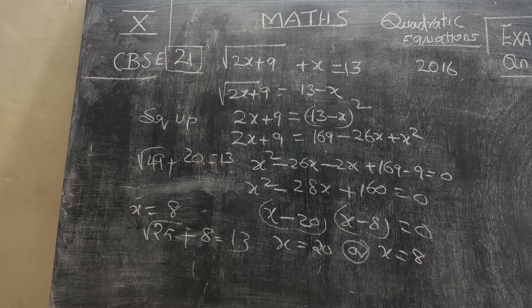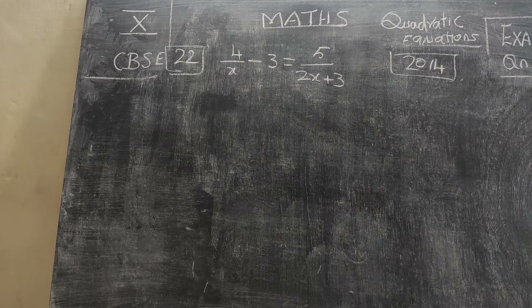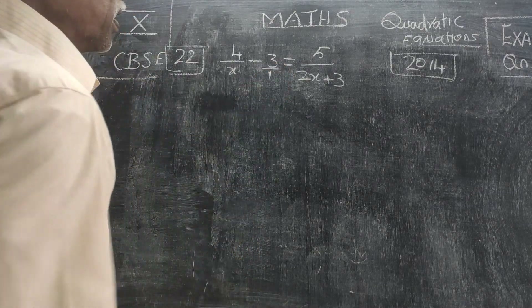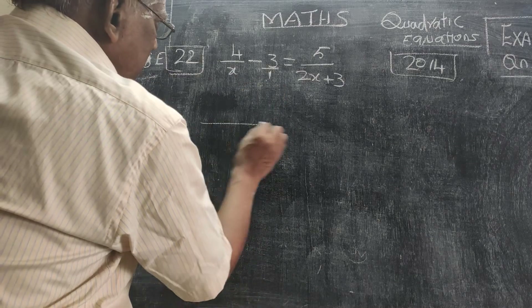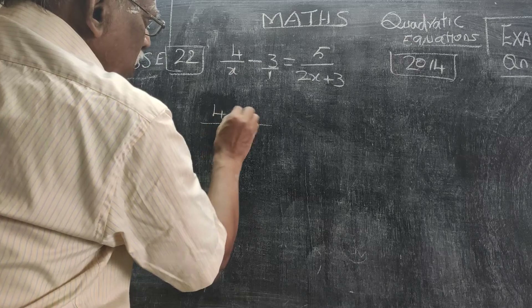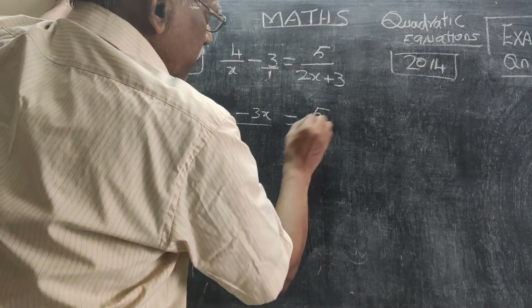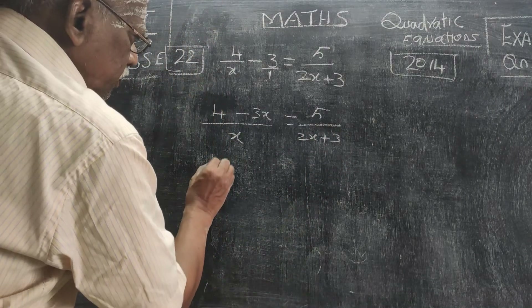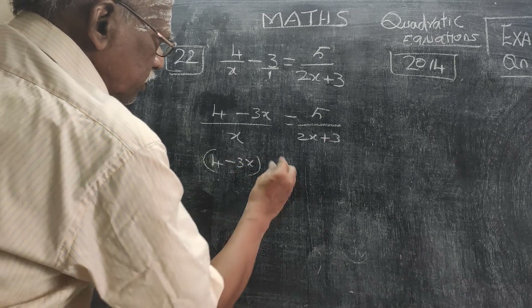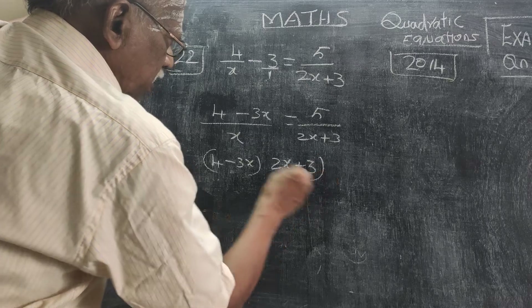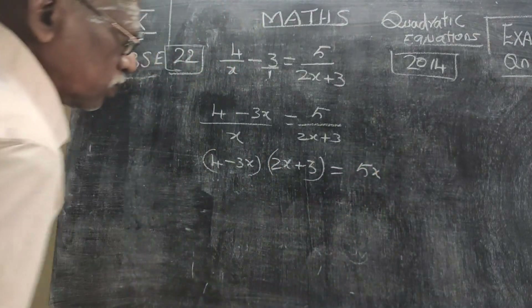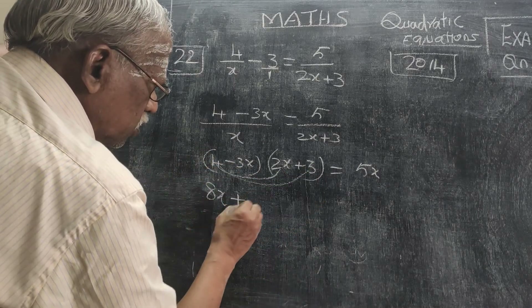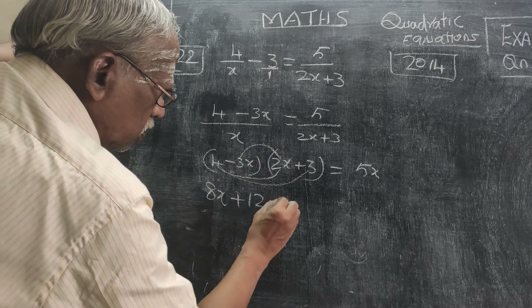Now go to problem 22. Here we have 4/x minus 3 equal to 5/(2x+3). Taking LCM as x, the left side becomes (4 minus 3x)/x. Now cross-multiplying: (4 minus 3x)(2x+3) equals 5x.